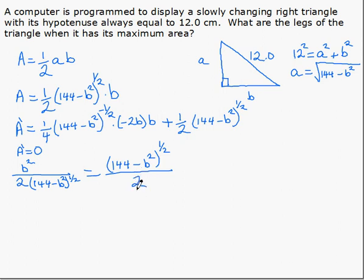Now, we're not seeing the cancellation that we have in previous problems, but cross-multiplying here, we can cancel the twos. We end up with B squared